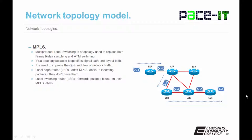Now let's discuss MPLS — Multi-Protocol Label Switching. It is a topology used to replace both frame relay switching and ATM switching, and it's considered a topology because it specifies a signal path and layout. MPLS is used to improve the quality of service and flow of network traffic. It uses Label Edge Routers (LERs), which add MPLS labels to incoming packets if they don't already have them. The LERs pass packets along to Label Switching Routers (LSRs), which forward packets based on their MPLS labels — and that's what makes this a topology.